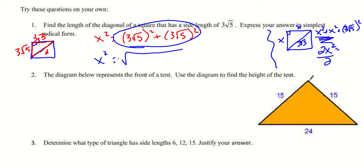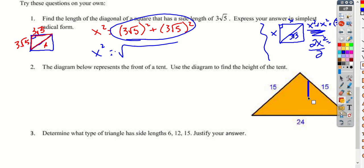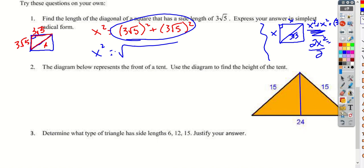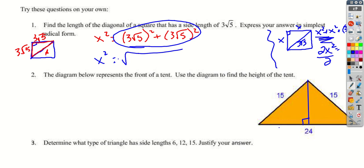For finding the height of an isosceles triangle, remember the height is drawn perpendicular to the base. Because it's isosceles, this creates a right angle and bisects the base — it's the perpendicular bisector. Good luck finishing the rest of the worksheet; we'll go over it Monday and do more Pythagorean theorem questions then.